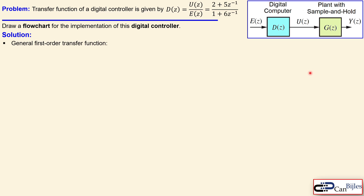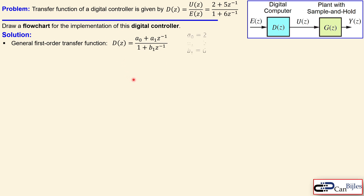The general first order transfer function can be expressed using this model. You see D(z) here which has three parameters: a0, a1, and b1. Looking at the transfer function given and comparing it to the model, we can identify that a0 is 2, a1 is 5, and b1 is 6.